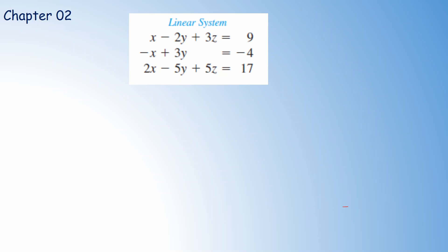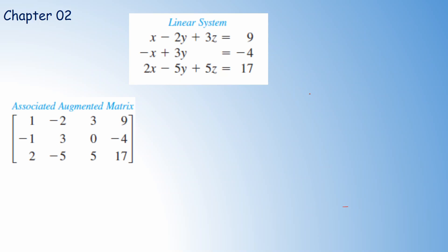Suppose we have this linear system: x minus 2y plus 3z equals 9, minus x plus 3y equals minus 4, and 2x minus 5y plus 5z equals 7. The starting point is to write down the corresponding augmented matrix. If the linear system has the form Ax equals B, where A is the coefficient matrix, x is the variable vector, and B is the right-hand side vector, then write down the corresponding augmented matrix [A | B].